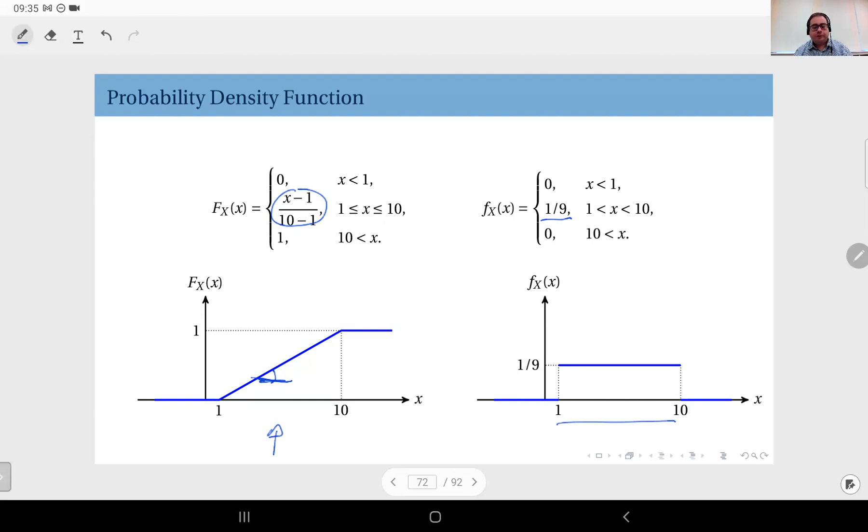So the PDF of this random variable is constant between 1 and 10, which fits perfectly with our assumption of this being an equally probable outcome random experiment. Recall the first definition, how we wrote this random variable - you select a random real number in the interval from 1 up to 10, which are all equally probable.